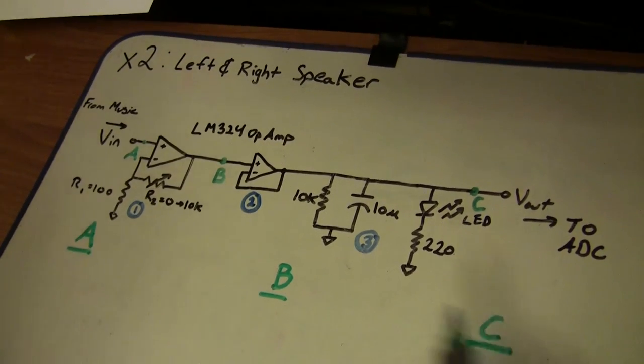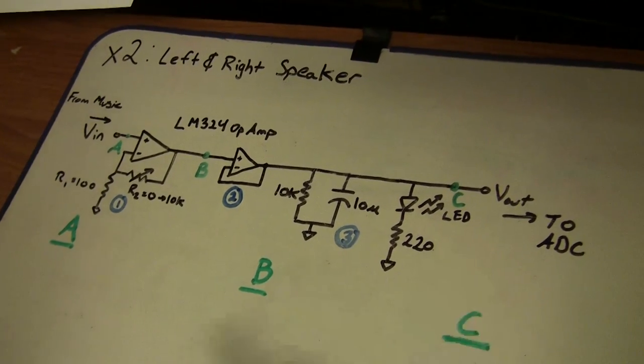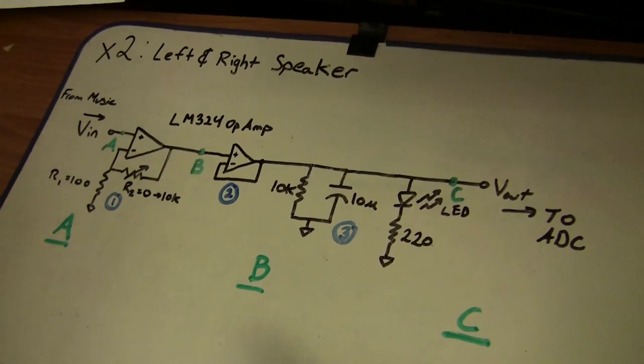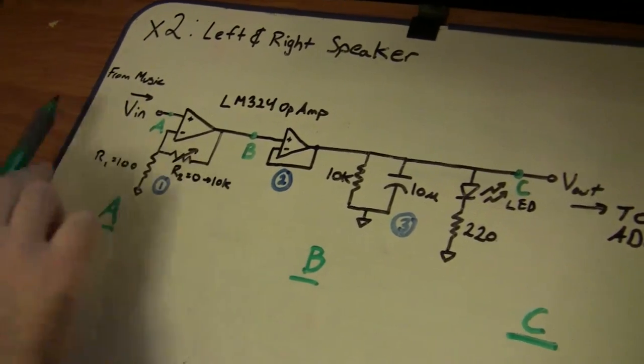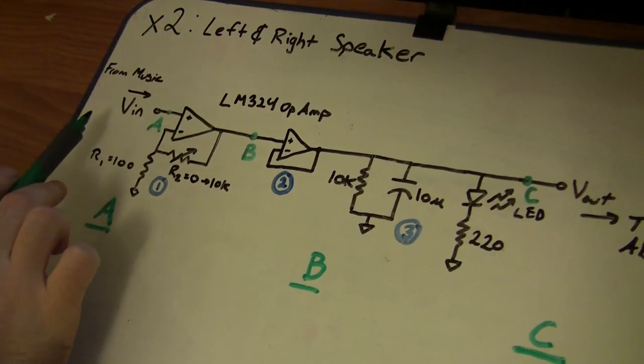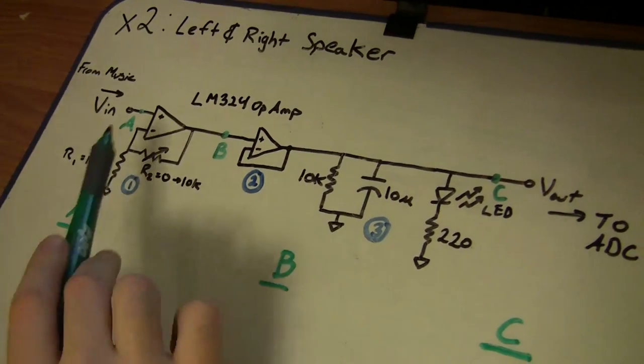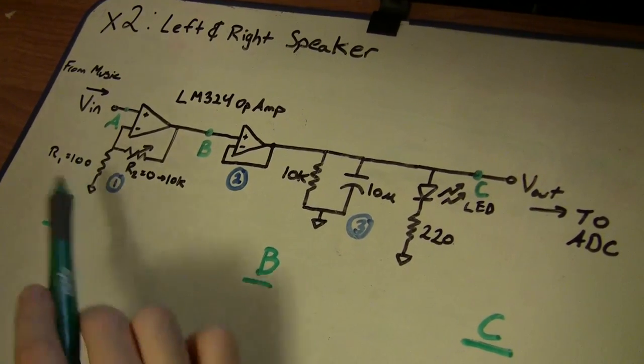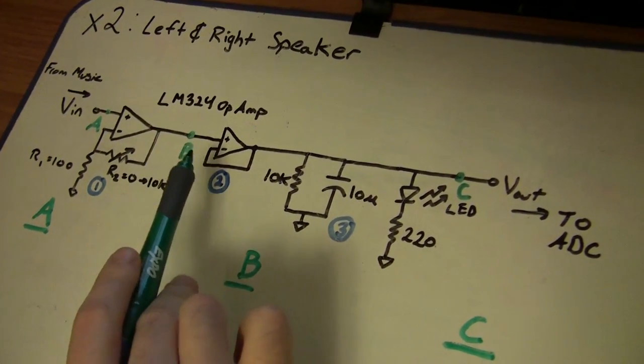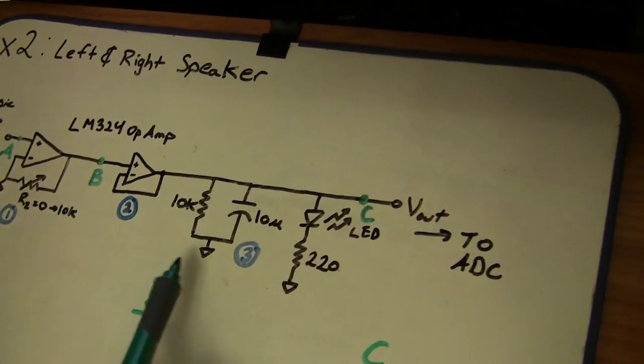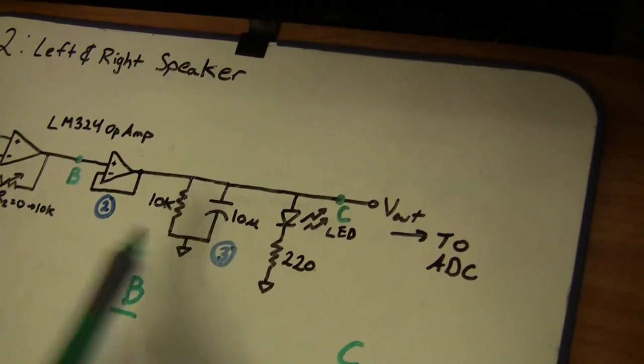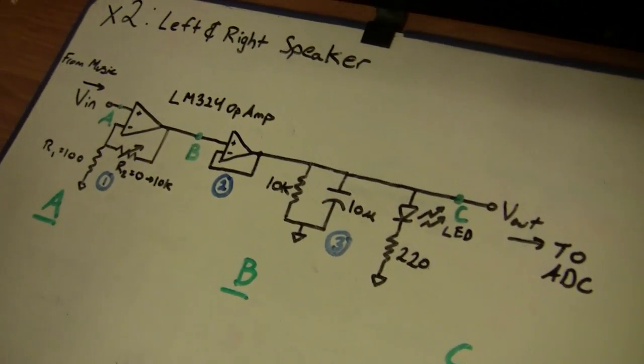This is the circuit we're going to be using. We're going to have to build this twice, one for the left channel and one for the right channel. So we start off with the weak input signal from the audio jack, then we put this through an amplifier stage right here, and then we put it through a buffer, which finally feeds that into a low-pass filter stage here. So now I'm going to go through each stage individually and better explain them.